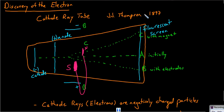Until about 1897, electrons were discovered. J.J. Thomson had been experimenting with the cathode ray tube. This is a tube in which there was a cathode and also an anode.